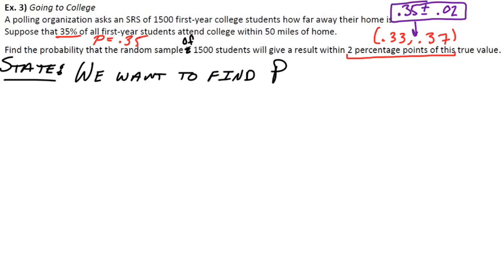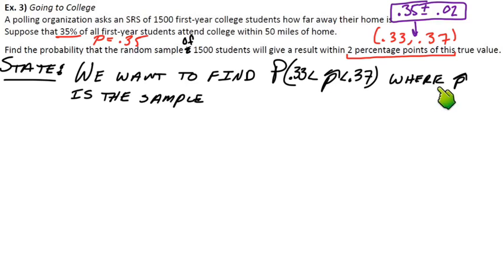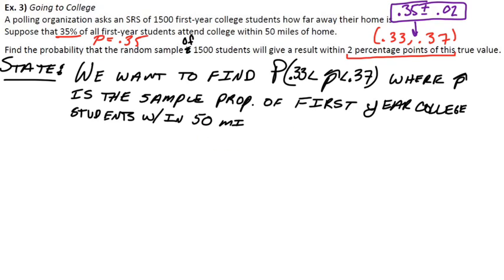So state, what exactly do we want to do? We want to find what's the probability that we get a P-hat between 0.37 and 0.33. So instead of writing that whole statement out, it's actually really efficient to just write this probability statement like this.